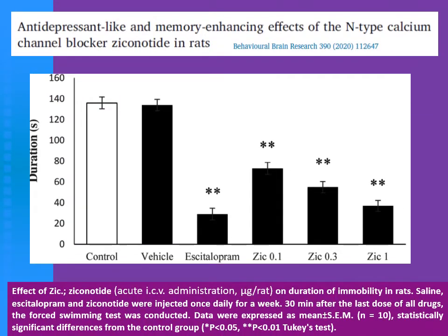This is an example: a research exploring the antidepressant-like activity of N-type calcium channel blocker ziconotide in rats. Ziconotide is not an antidepressant drug — it is just a calcium channel blocker. In this study, they used three doses of ziconotide in comparison to escitalopram. Here, the escitalopram group is used as a positive control.